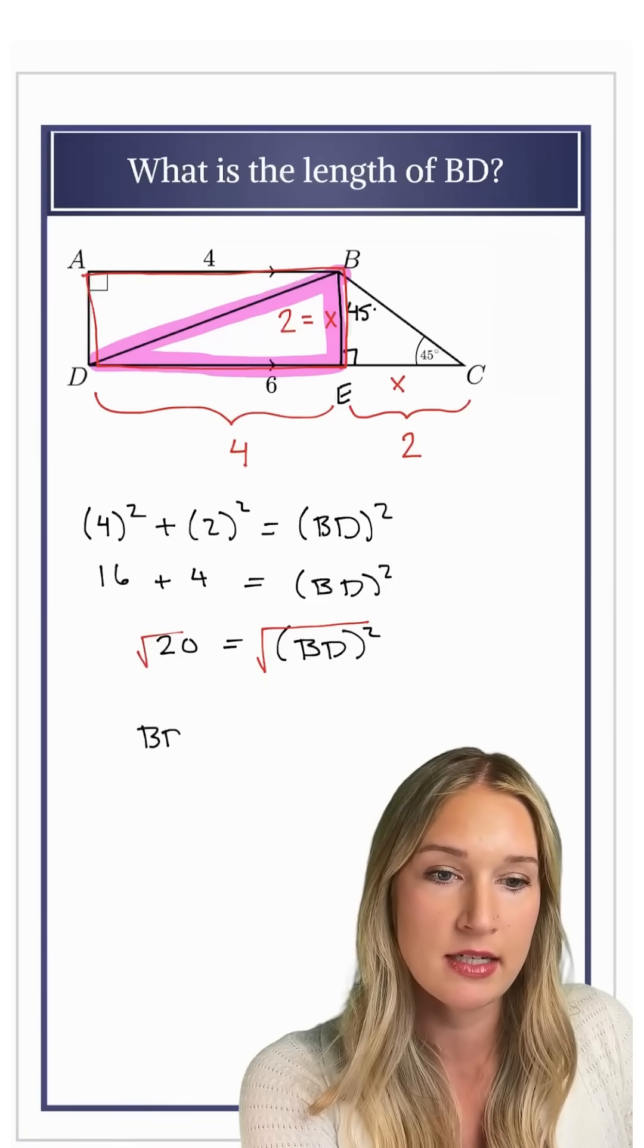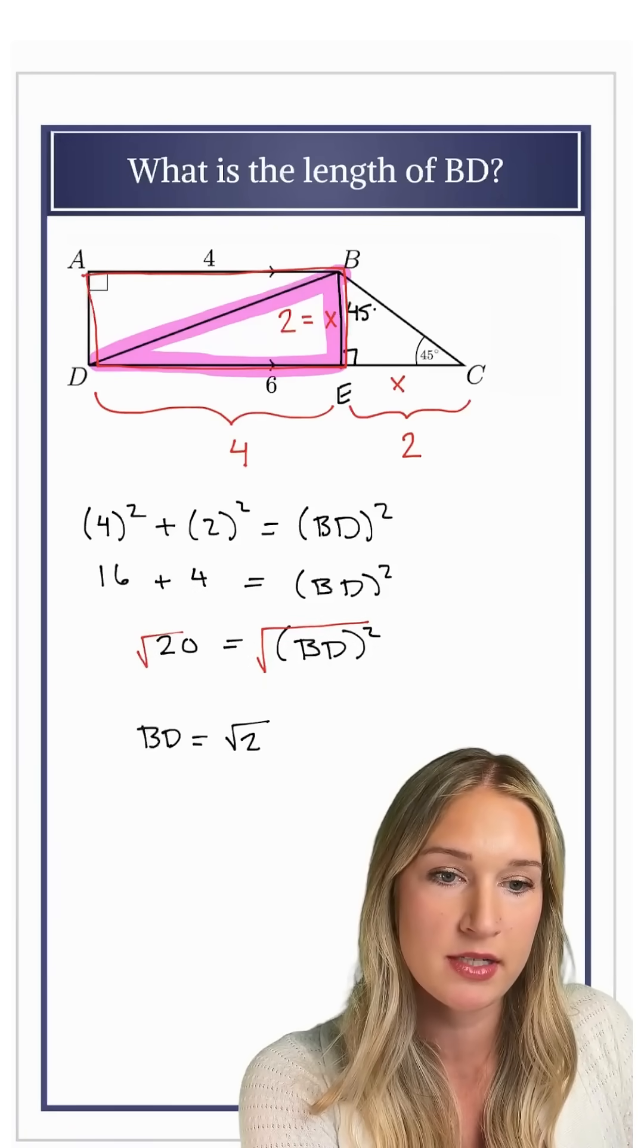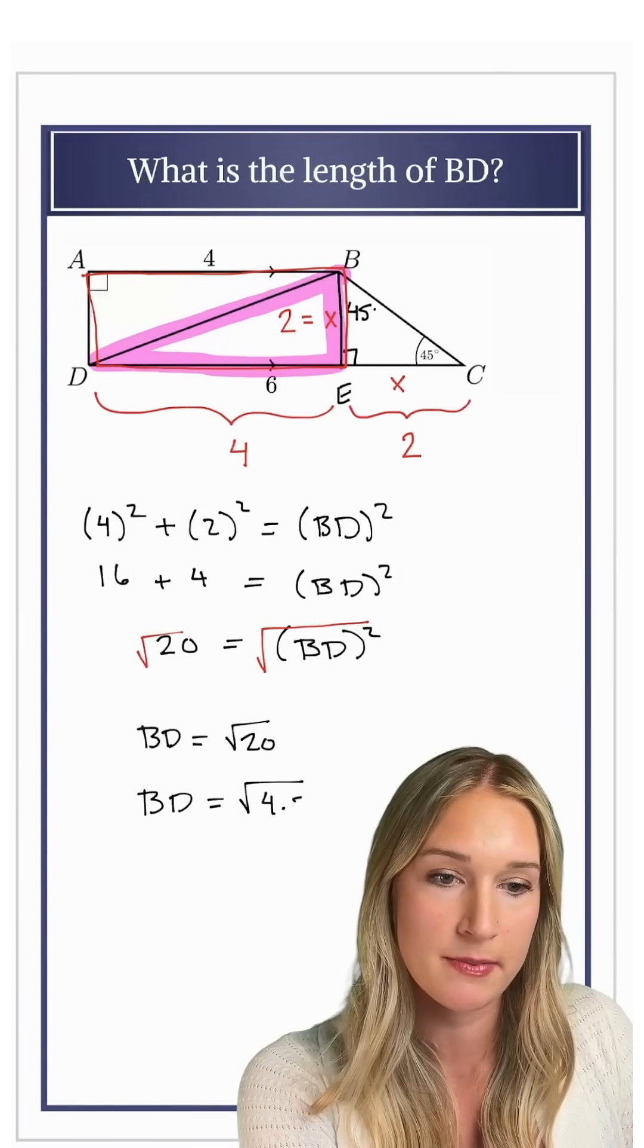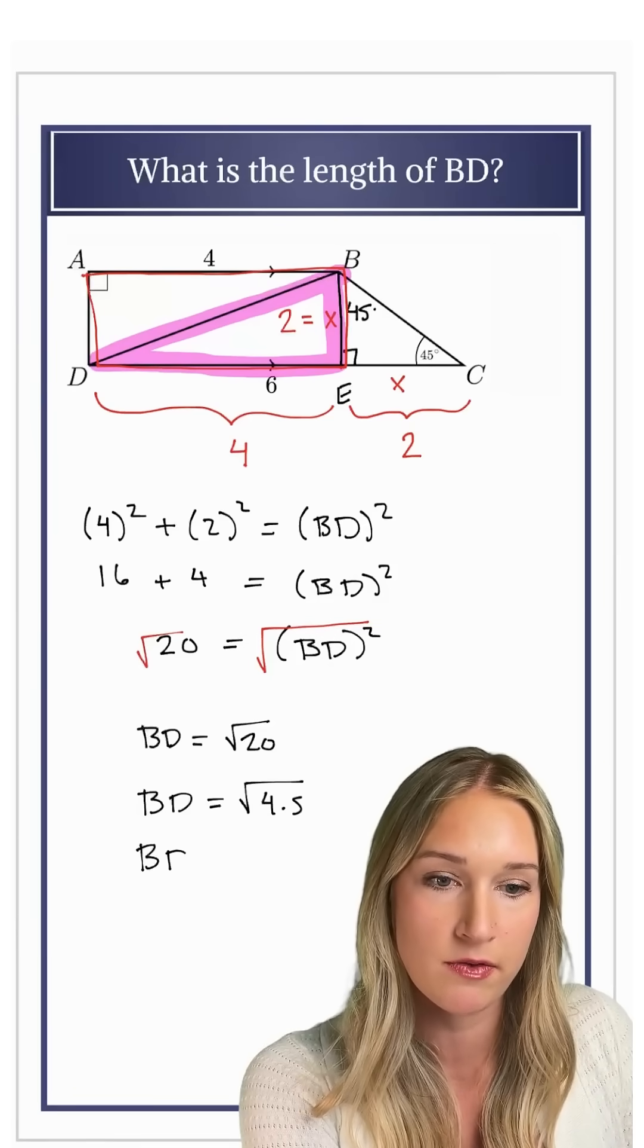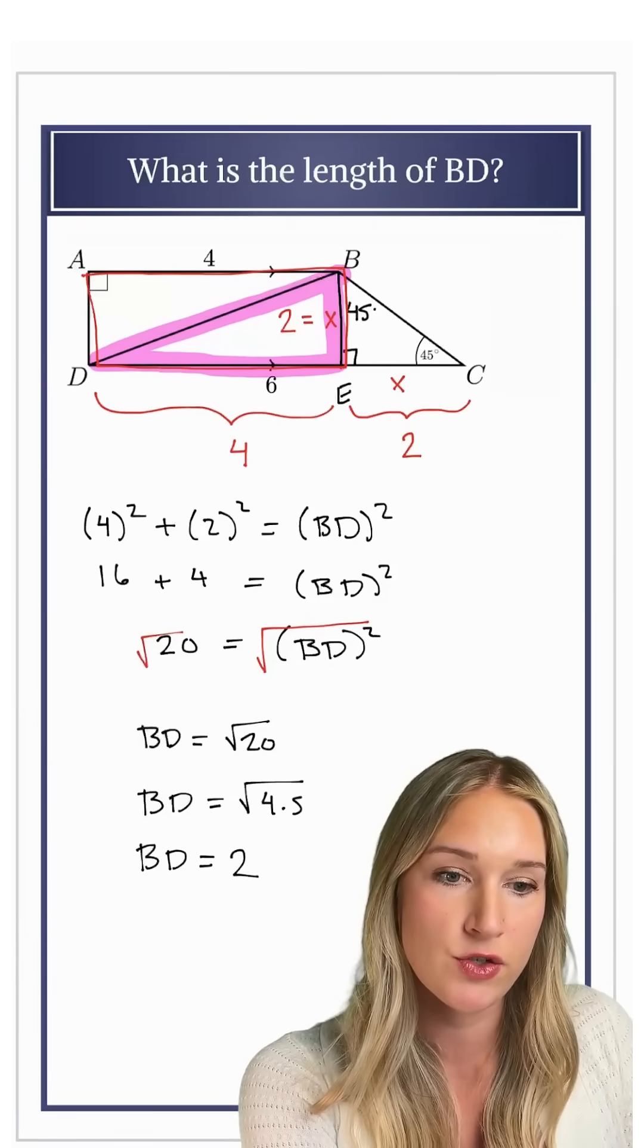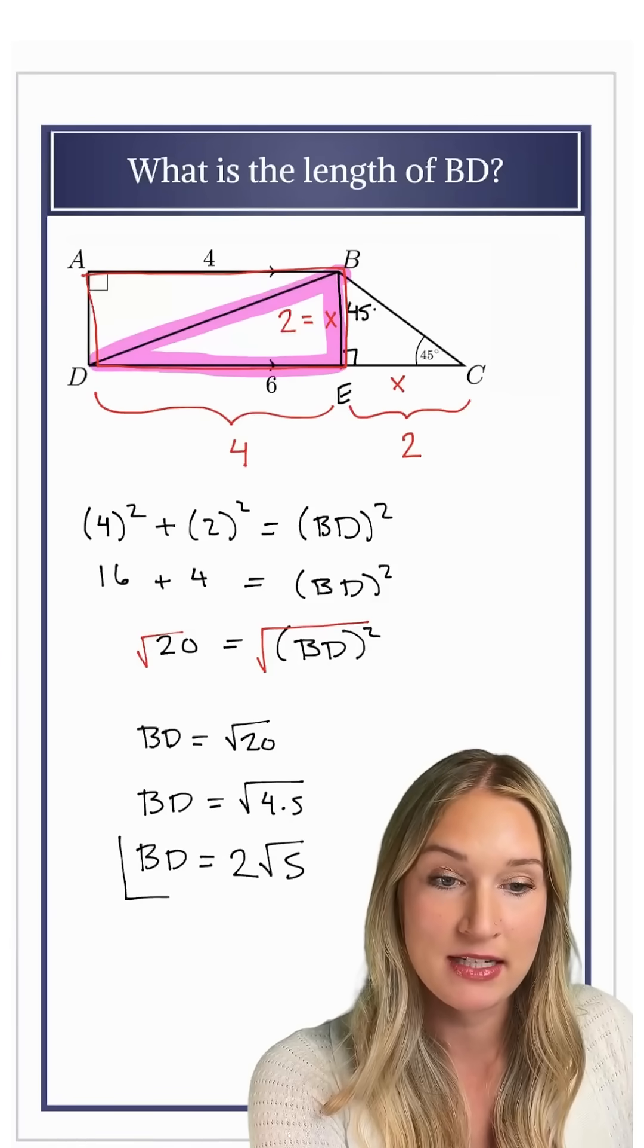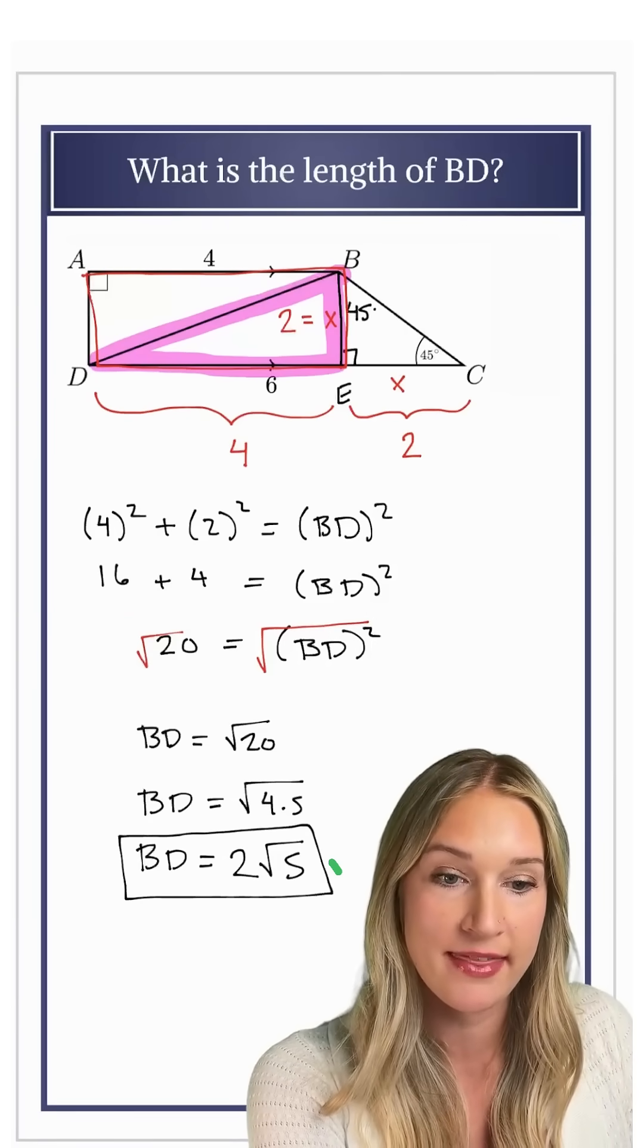So BD will equal the square root of 20, which can simplify by factoring it into the square root of 4 times 5 and taking the square root of 4 as 2 square root of 5. So my length BD is 2 square root 5, and that is it.